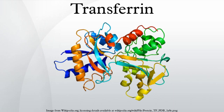Transport mechanism: When a transferrin protein loaded with iron encounters a transferrin receptor on the surface of a cell, it binds to it and, as a consequence, is transported into the cell in a vesicle by receptor-mediated endocytosis.